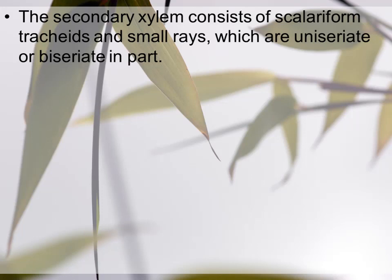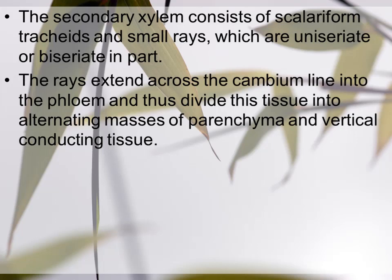Rays extend across the cambium line into the phloem and thus divide this tissue into alternating masses of parenchyma and vertical conducting tissues. جو medullary rays ہوتے ہیں وہ cambium تک extend ہوتے ہیں اور cambium سے ہوتا ہوا phloem تک بھی جاتے ہیں، جس کی وجہ سے وہ phloem کے conducting tissue کو divide کرتے ہیں۔ دو phloem tissue کے بیچ میں parenchymatous tissue present ہوتا ہے۔